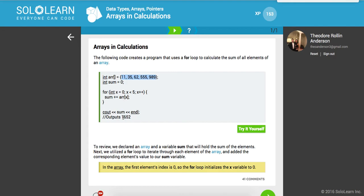To review, we declared an array and a variable sum that will hold the sum of the elements. Next, we utilized a for loop to iterate through each element of the array and added the corresponding element's value to our sum bucket. It's just this aggregation of all the values that we provide within this condition.